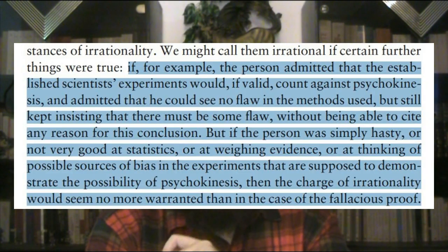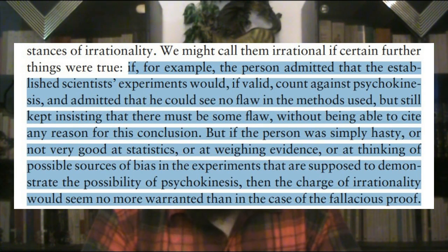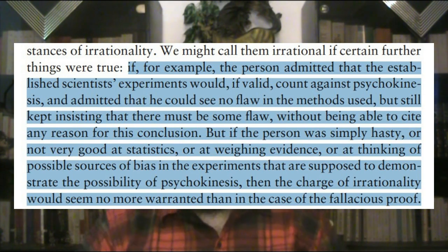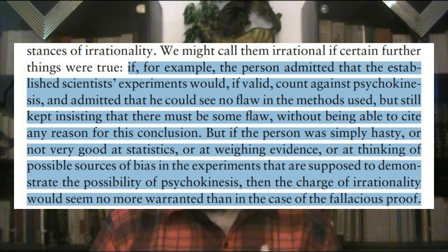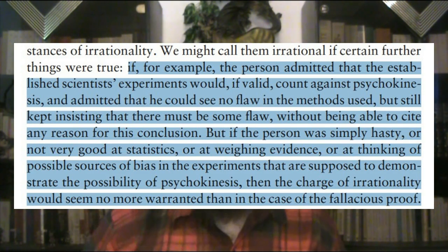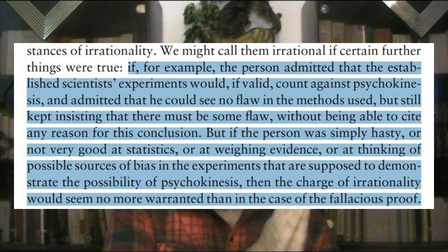Scanlon argues that irrationality would require something more. We can call someone who is convinced of a fallacious or mistaken belief irrational if, for example, the person admitted that established scientific experiments would, if valid, count against psychokinesis, and admittedly that he could see no flaw in the method used, but still kept insisting that there must be some flaw without being able to cite any reason for this conclusion. But if the person was simply hasty or not very good at statistics or at weighing evidence, or thinking of possible sources of bias in the experiments, then the charge of irrationality would seem no more warranted than in the case of the fallacious proof.